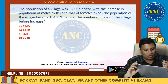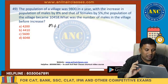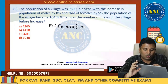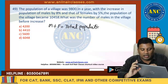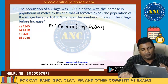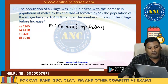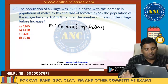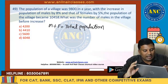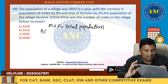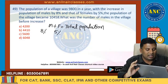Another question: male plus female equals total population — one more question, three questions on this model so that you will have no doubt. In a year, with the increase in number of males by 8% and females by 5%: forget about 8% first. If it is 5% — step 1: male increases by 5%, females increase by 5%, so population also increases by 5%.